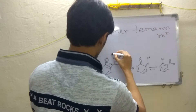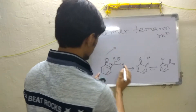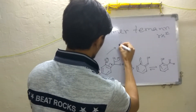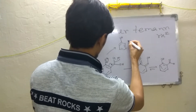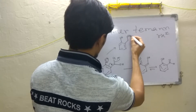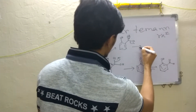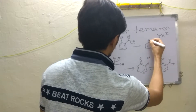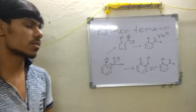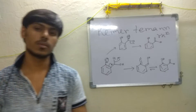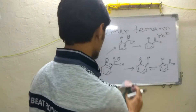Alternatively, you can show it by a proton exchange mechanism, where proton exchange occurs to give a tetrahedral intermediate with O⁻ and Cl, and it collapses in that way. Either of the two mechanistic representations is acceptable. This is the mechanism of the Reimer-Tiemann reaction.